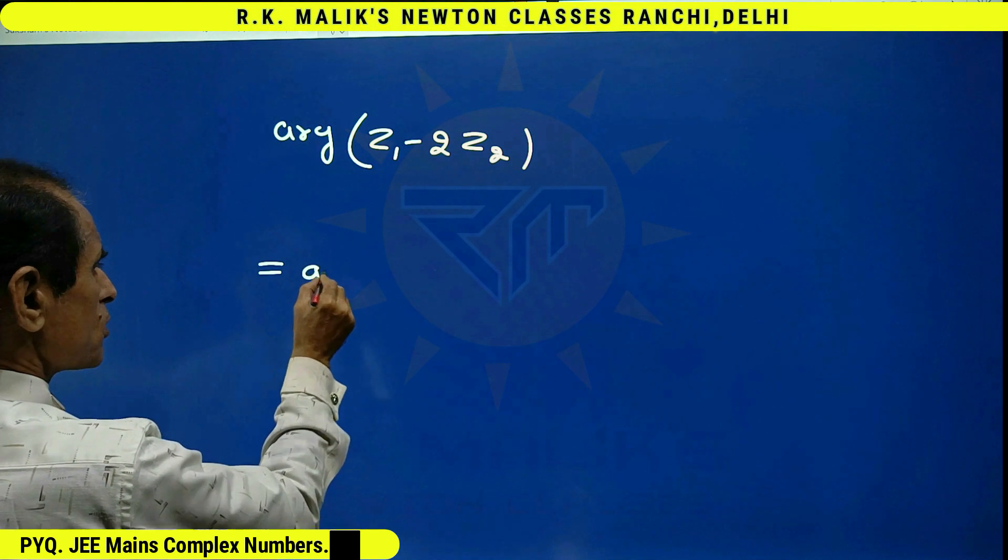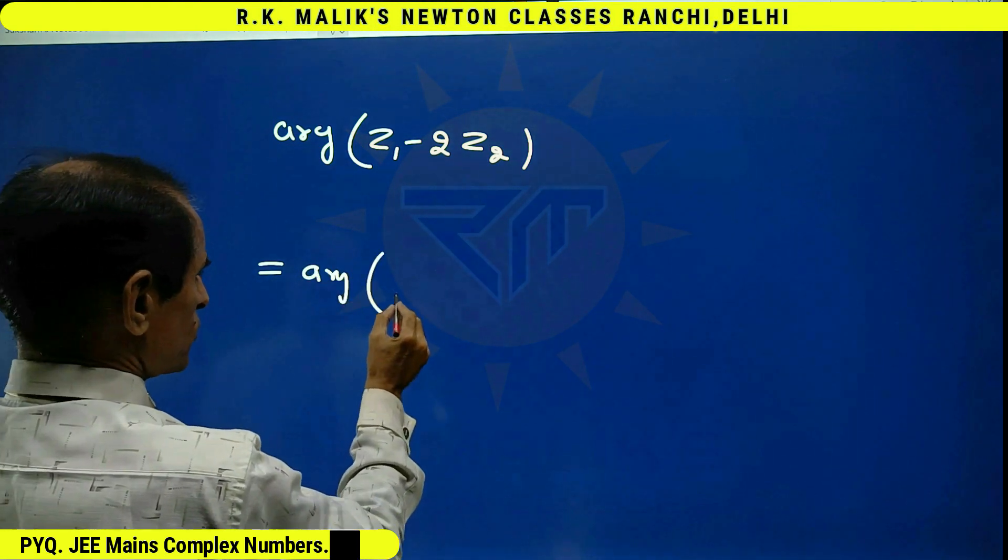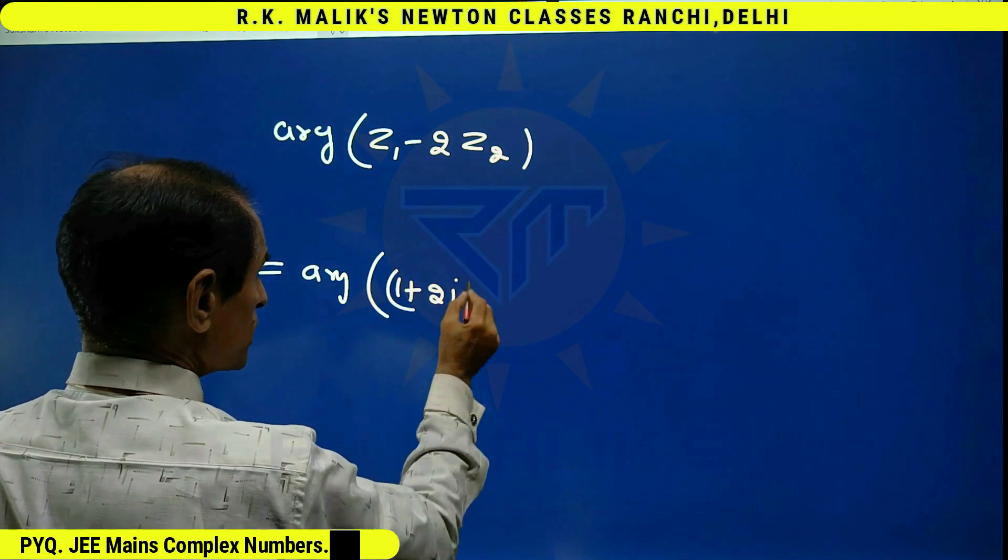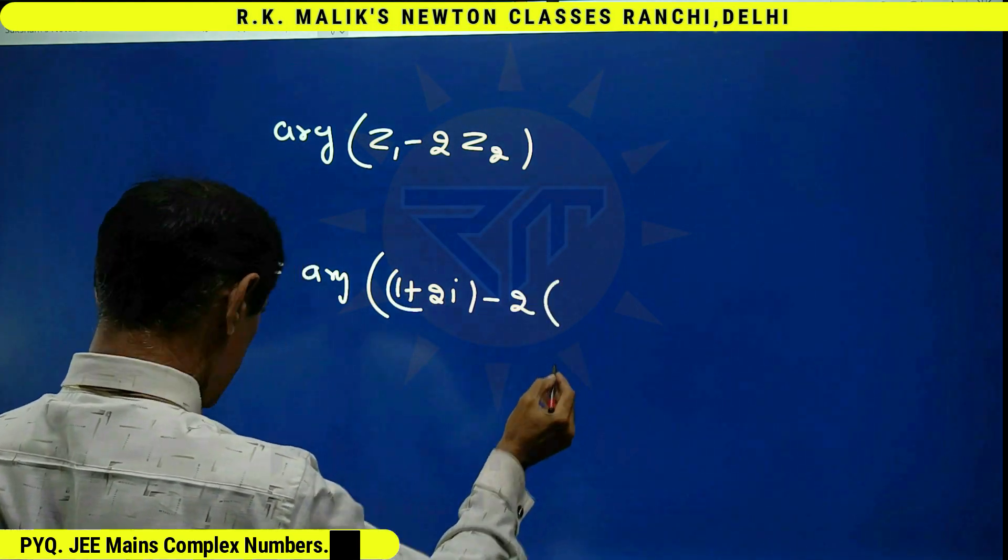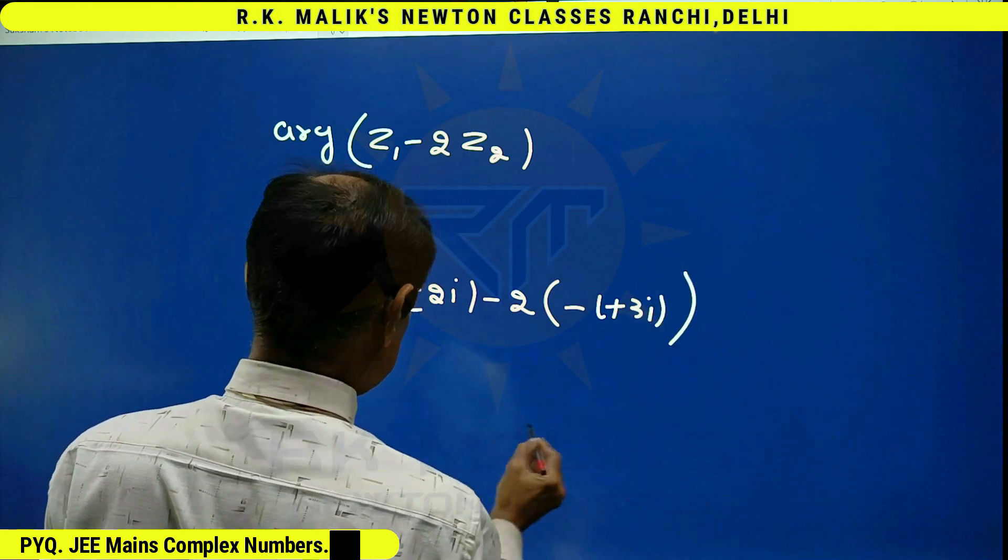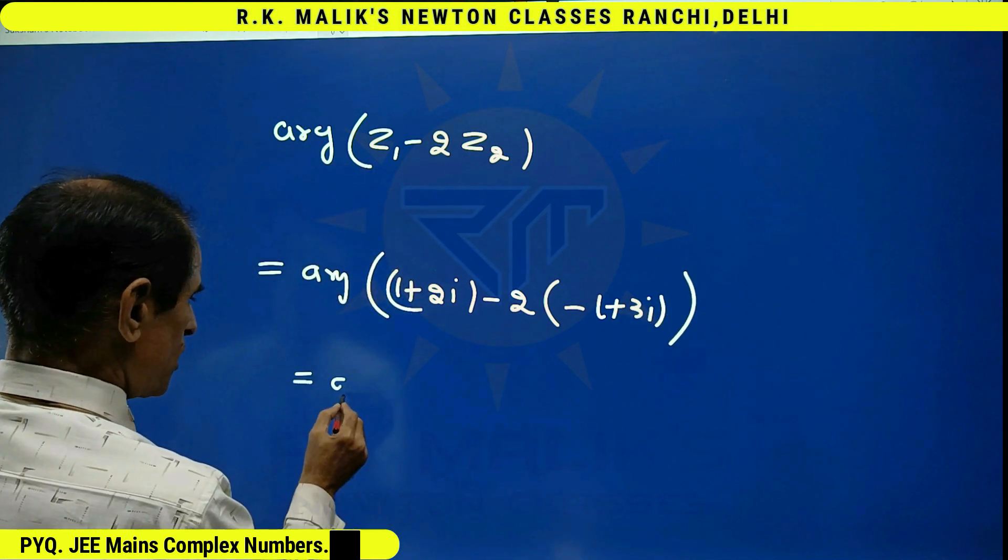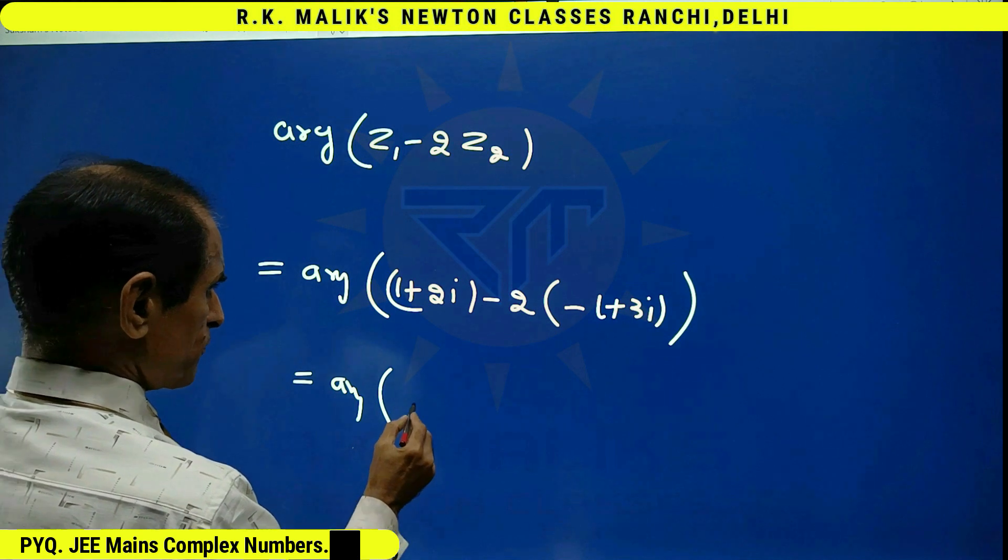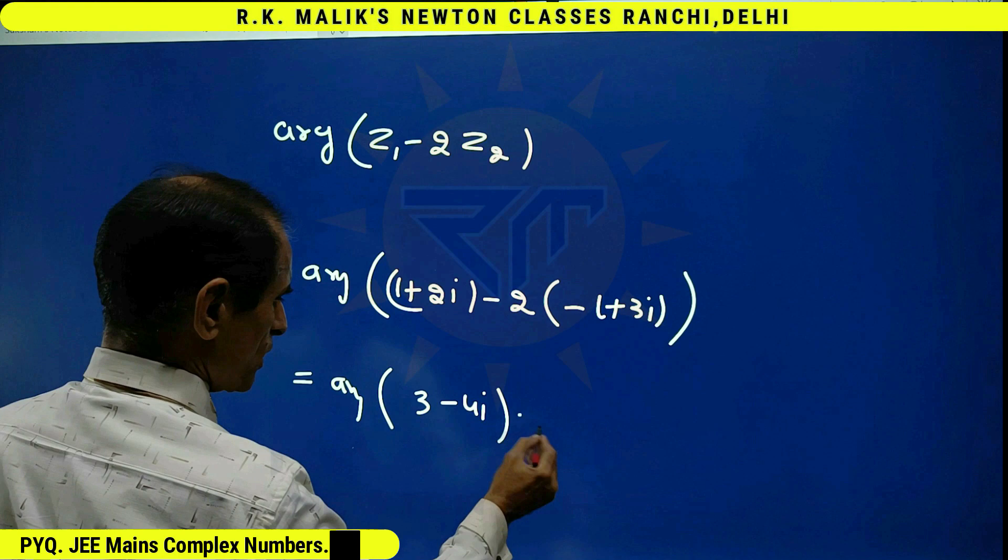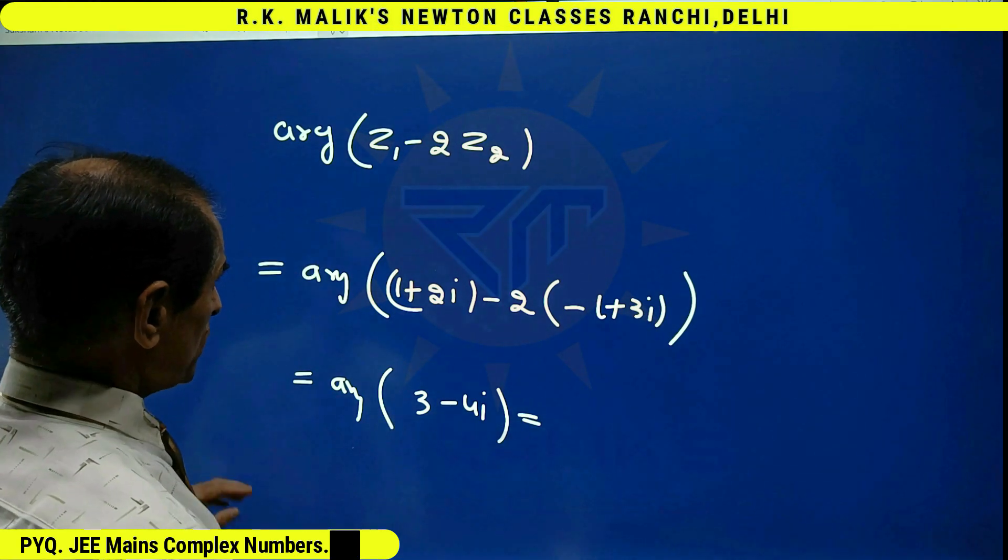That is, argument of (1 plus 2i) minus 2 times (-1 plus 3i). That is, argument of 3 minus 4i.